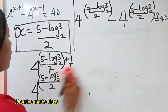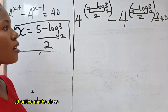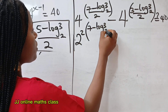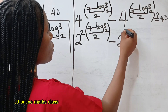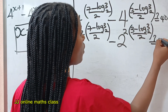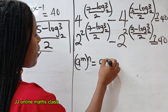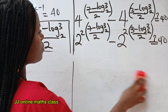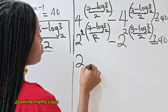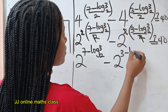Let's change this 4 to base 2 so that we can cancel out the denominator. So we now have 2^2 raised to the power of (7 minus log 3 base 2)/2 minus 2^2 raised to the power of (3 minus log 3 base 2)/2. Applying the law a^(m·n) = (a^m)^n, when 2 multiplies the denominator 2, they cancel. So we have 2^(7 minus log 3 base 2) minus 2^(3 minus log 3 base 2).